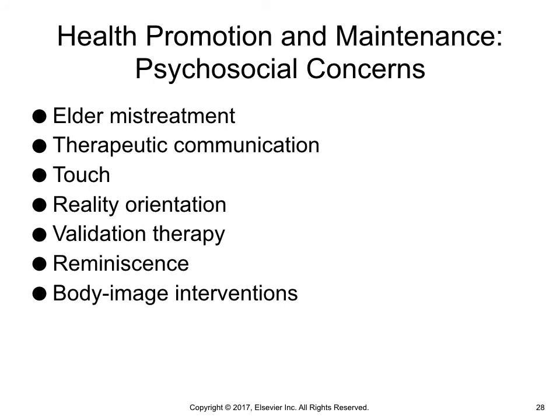Some interventions are more crucial for older adults experiencing social isolation, cognitive impairment, or stresses related to retirement, relocation, or approaching death. Elder mistreatment is defined as an intentional action that causes harm, or creates serious risk of harm, to a vulnerable elder by a caregiver or other person who is in a trust relationship to the elder. Types of elder mistreatment include physical abuse, emotional abuse, financial exploitation, sexual abuse, neglect — whether intentional or unintentional — and abandonment. Screen for elder mistreatment and assess for physical and emotional signs of abuse.